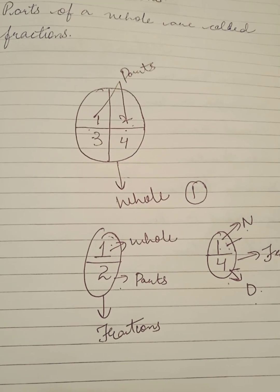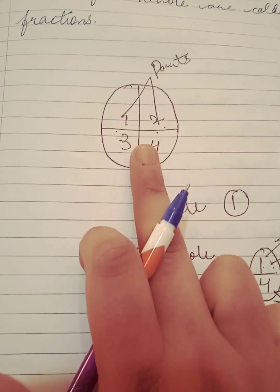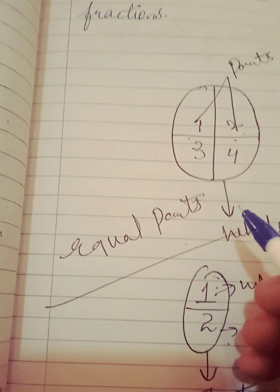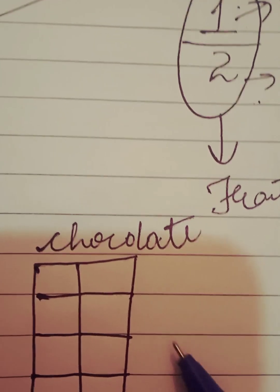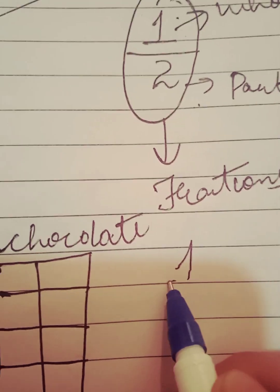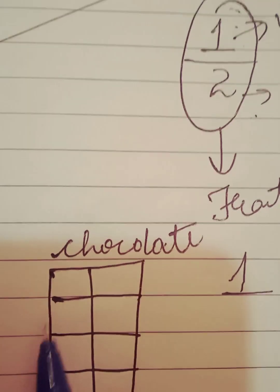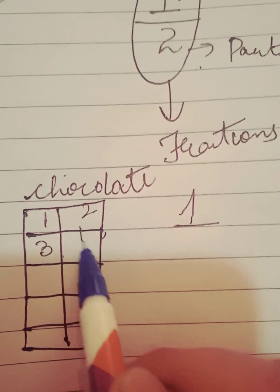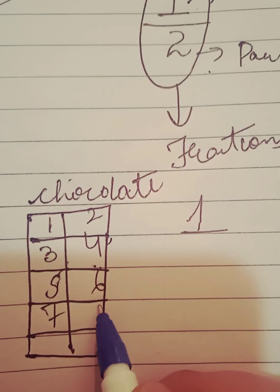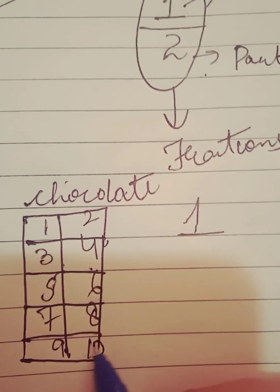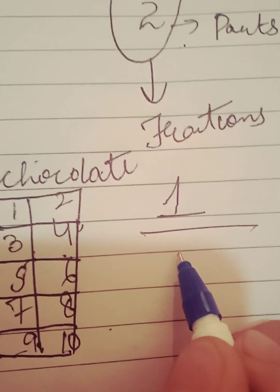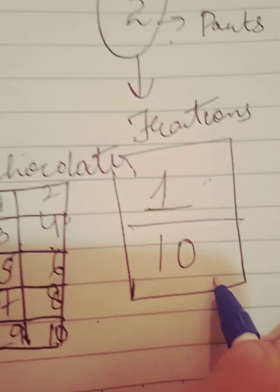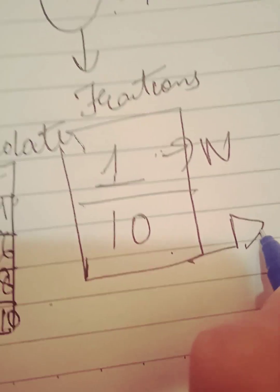Fractions are parts of a whole, and these must be equal parts — not unequal parts. For example, if we have a chocolate — one whole chocolate — and we break it into 10 pieces: 1, 2, 3, 4, 5, 6, 7, 8, 9, 10. We have 10 pieces of the whole. So our fraction is 1 by 10. Here, 1 is the numerator and 10 is the denominator.